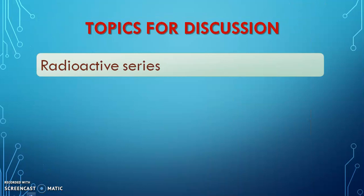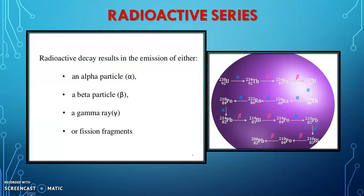Today, we are going to discuss about the radioactive series. We know that almost all the elements lying in the range of atomic numbers from 82 to 92 exhibit natural radioactivity. Some of the nuclei of these elements are unstable, and they disintegrate by ejecting either an alpha particle, a beta particle, gamma rays, or sometimes fission fragments.